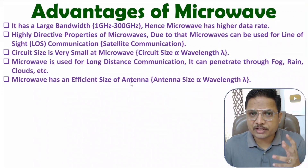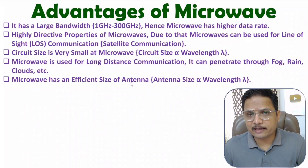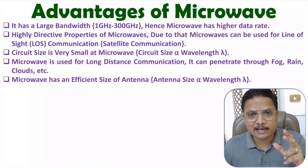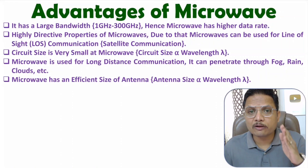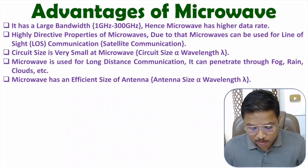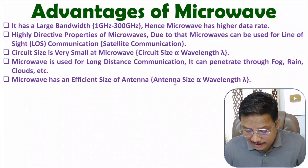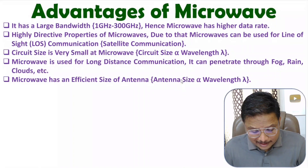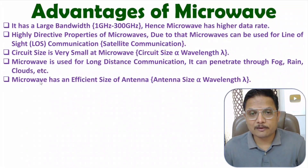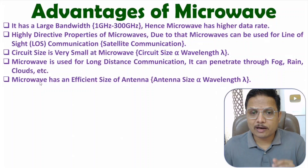The next advantage is based on antenna size. Microwave provides an efficient antenna size. The reason is that the size of the antenna also depends on wavelength. With microwave we have a shorter wavelength, so the antenna size will also be smaller.